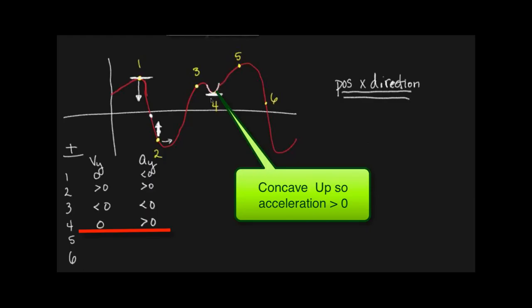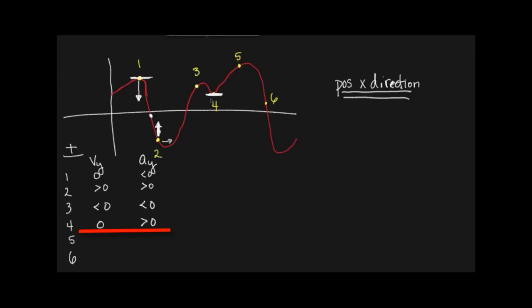This region right here is concave up. Alright, so then point five - what's going on at point five? If you move to the right ever so slightly, it's going to be decreasing. Good, so we start going down, so the velocity is less than zero. And then the acceleration is...